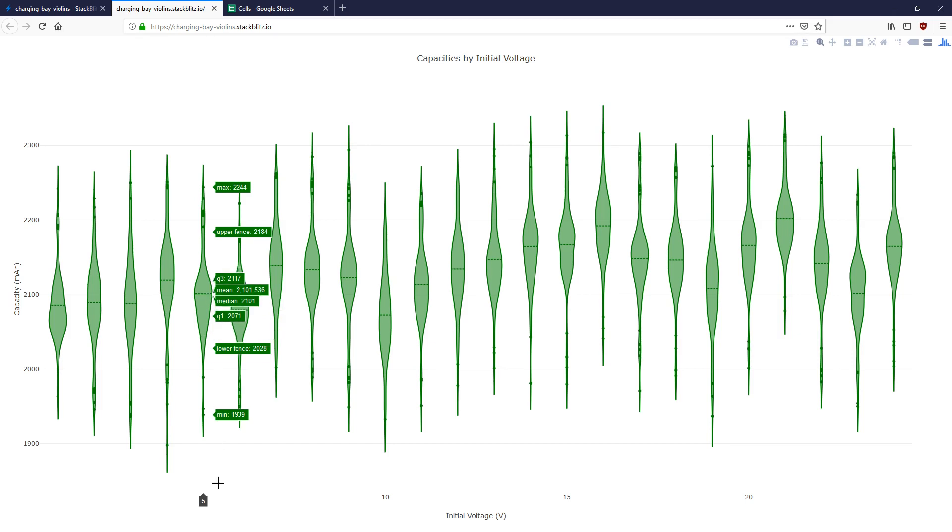So I can correct for that and say this bay is off by 29 milliamp hours. And I'll take and say every cell tested marked with bay 5, I'll shift up by 29 milliamp hours to get to the average.